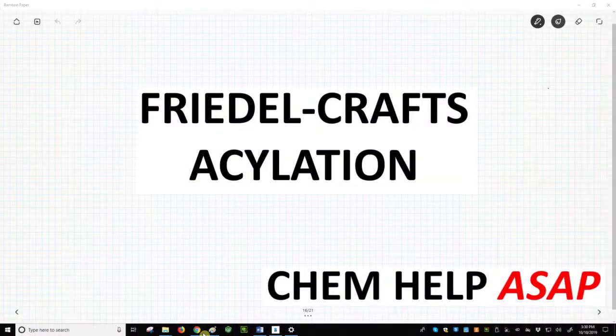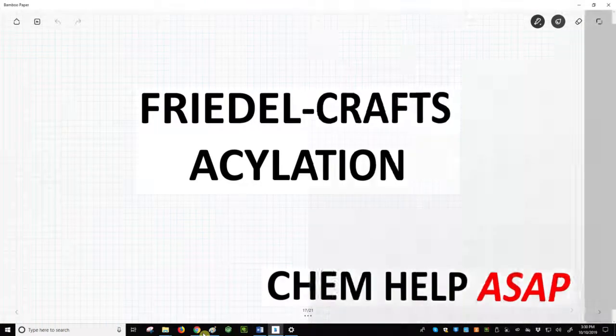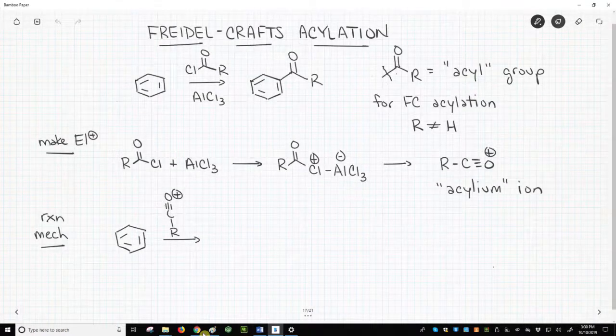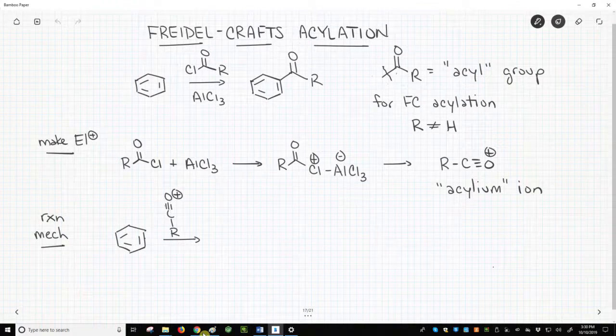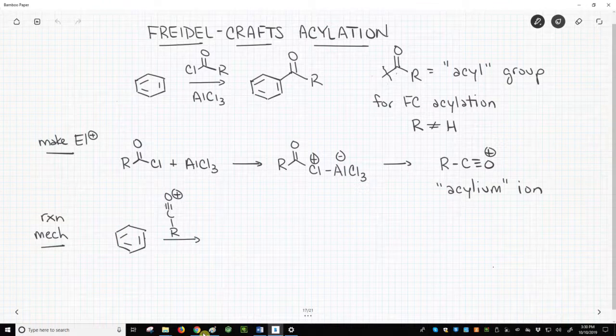Hello from Chem Help ASAP. This video covers the Friedel-Crafts acylation. At the top of the slide is our general reaction. In the Friedel-Crafts acylation, we react an aromatic ring with an acid chloride and AlCl3 to place an acyl group on the ring.